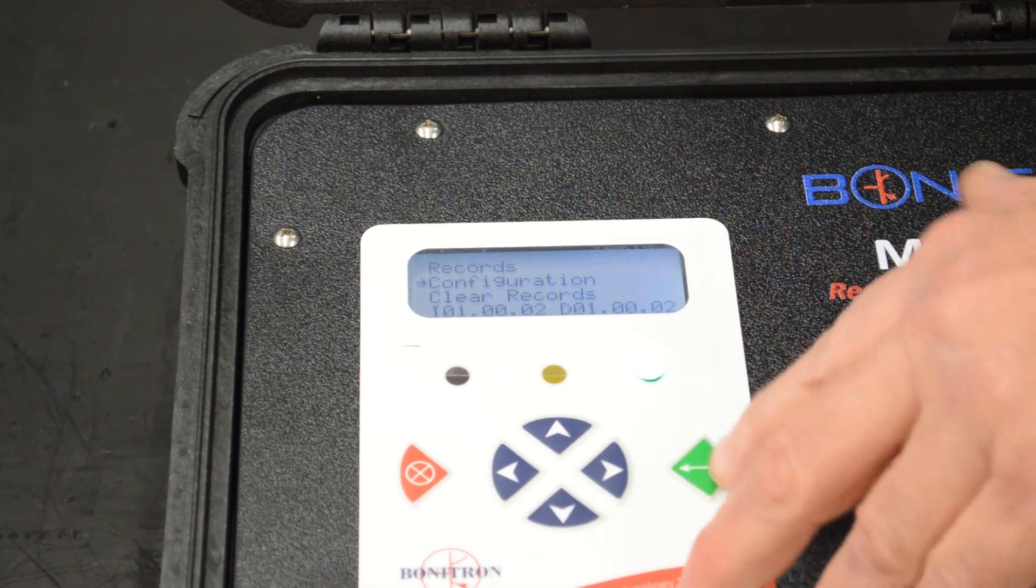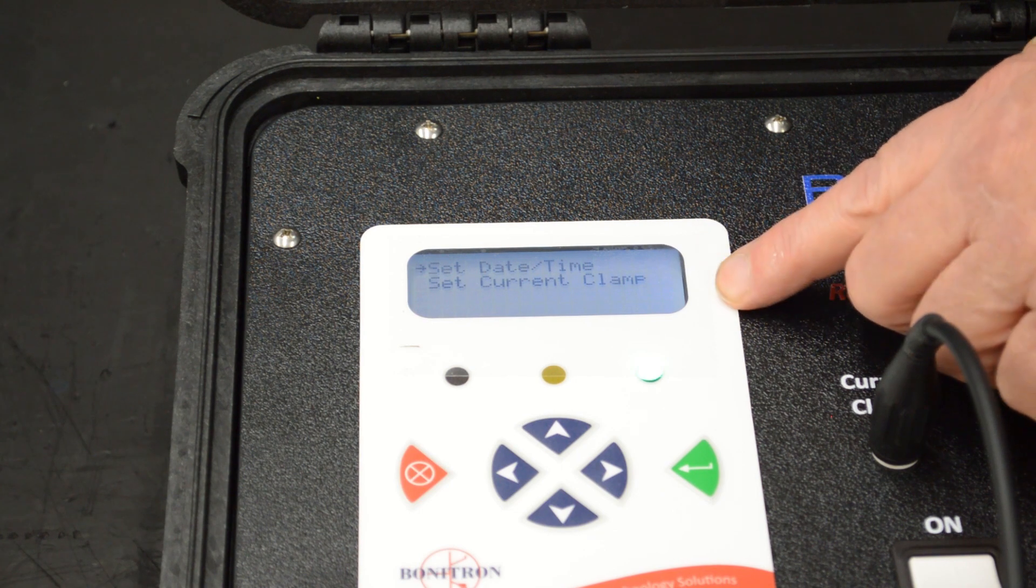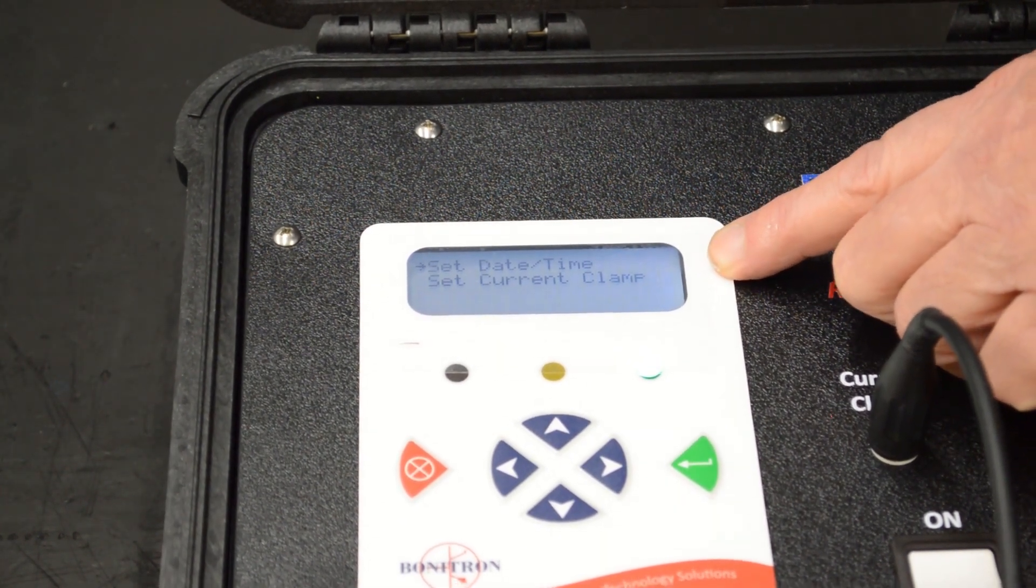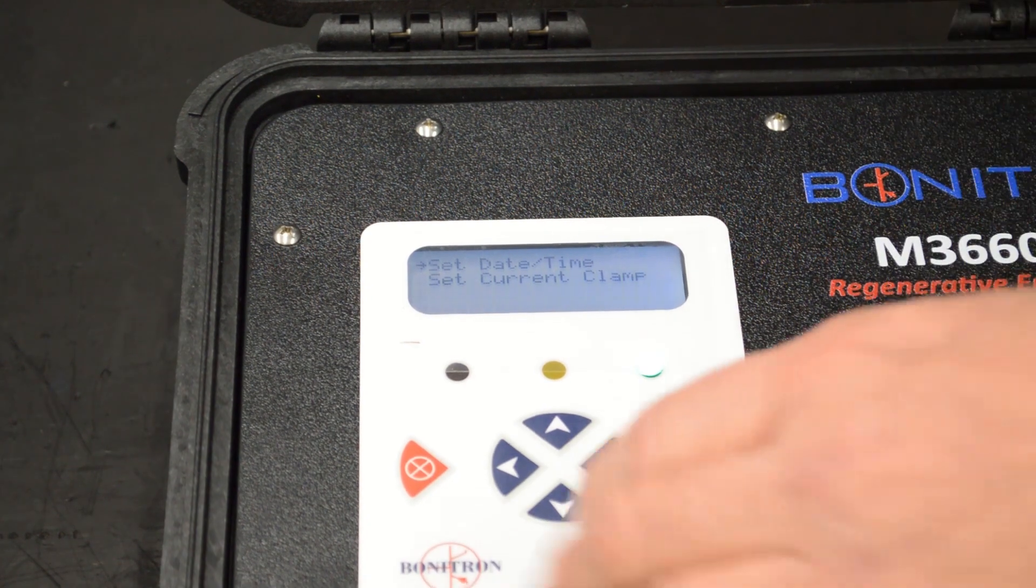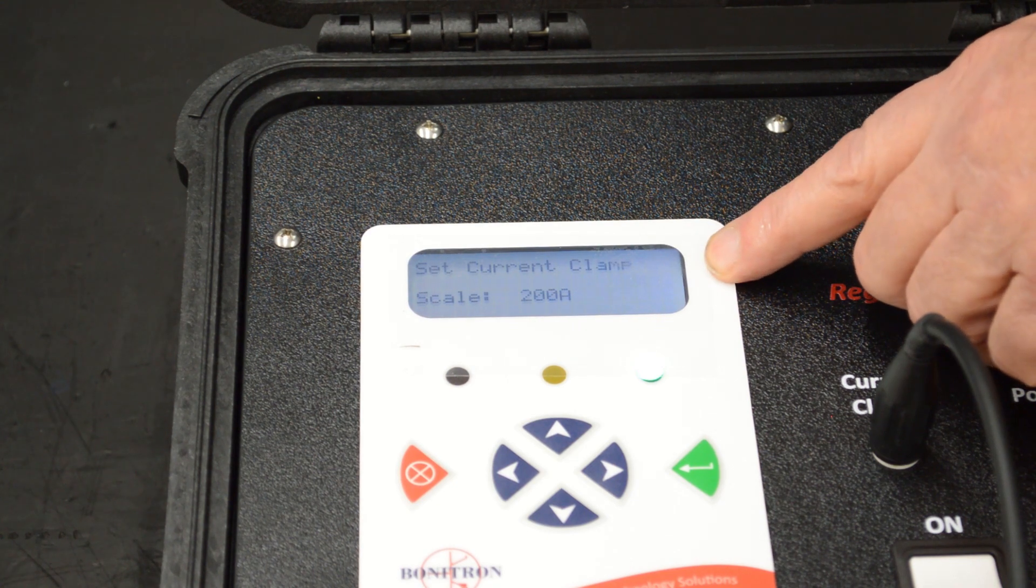Then you have the configuration menu, and that can set the date and time, and that can set the current clamp voltage also. Right now we have a scale of 200 amps.